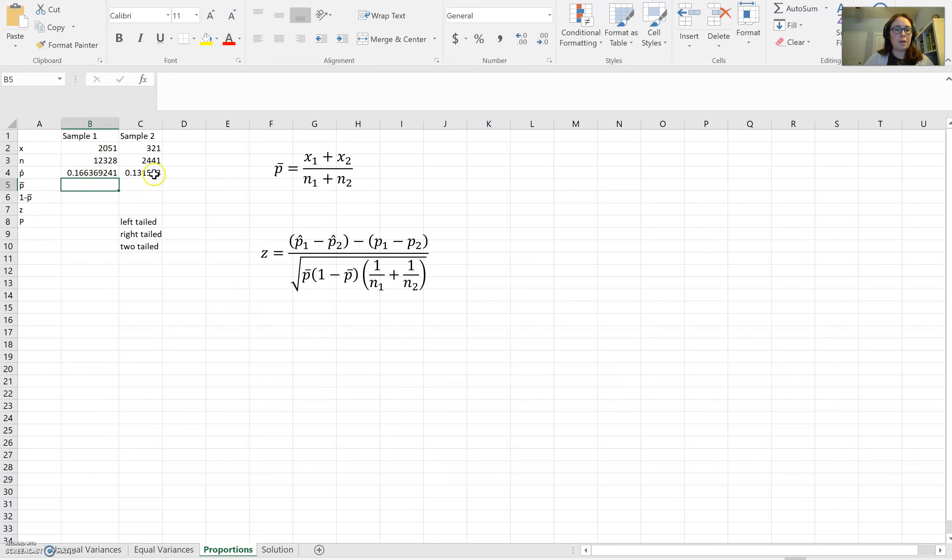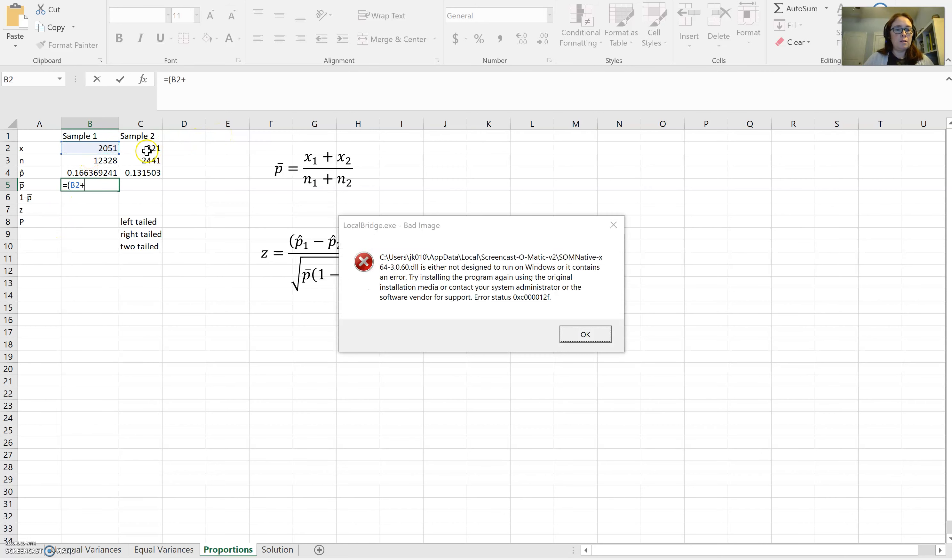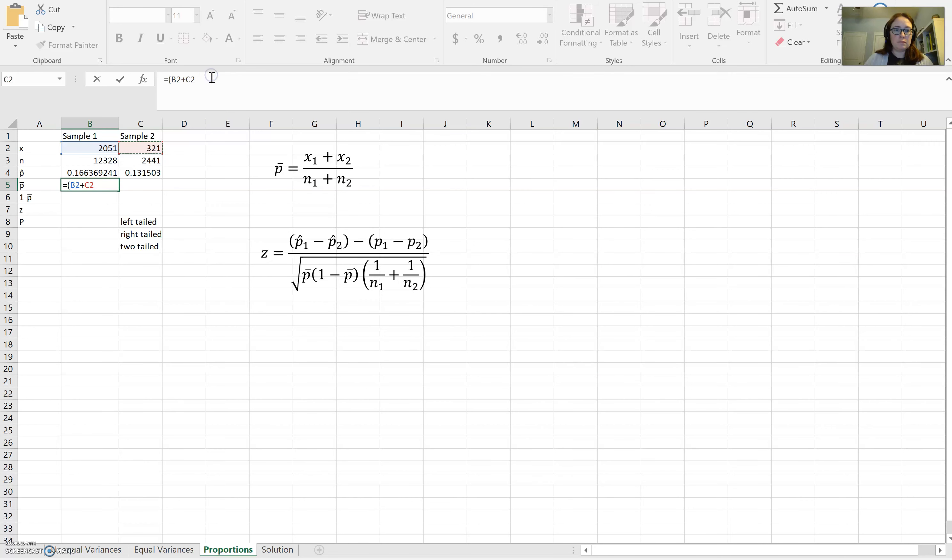So let's go over to Excel. So I've got all my information put in here. P-bar is going to be just using this formula here. I need parentheses around the addition, and I'm just going to call the cells. So I've got the sum on the top, divided by, and then n1, and I need parentheses around that as well. So n1 plus n2. And there is p-bar. Now I also have 1 minus p-bar in here. I'm going to go ahead and calculate that separately, just to make it a little bit easier to calculate this.